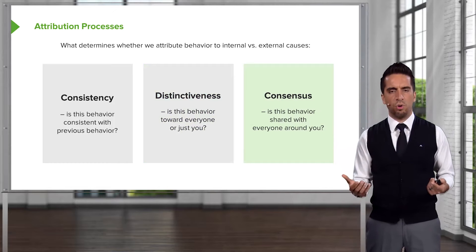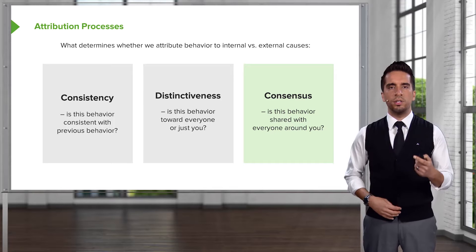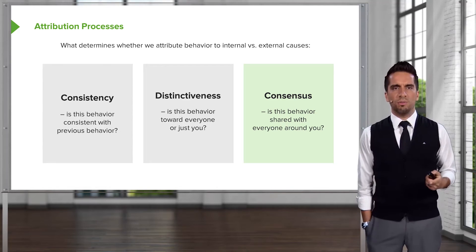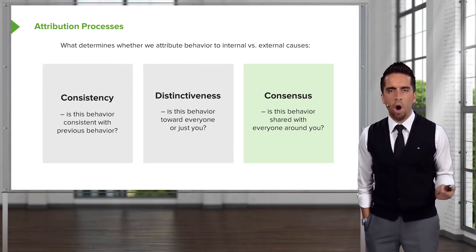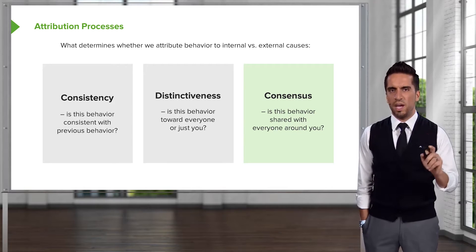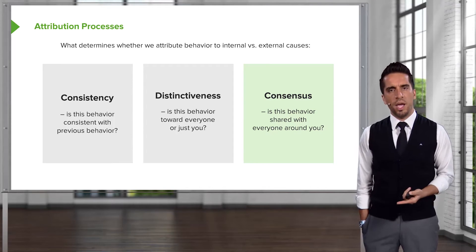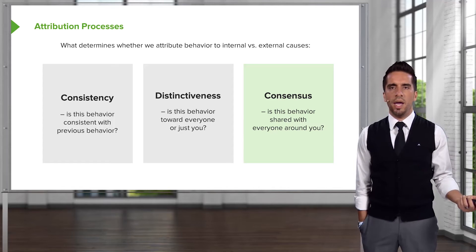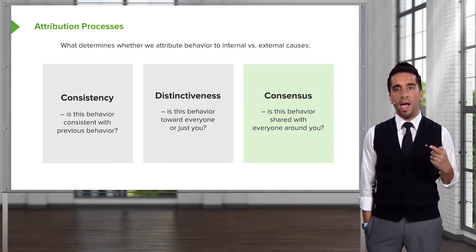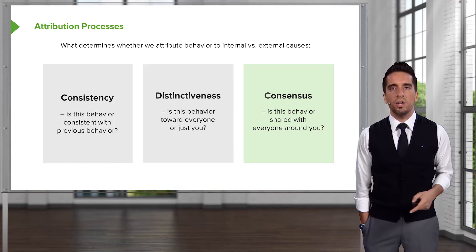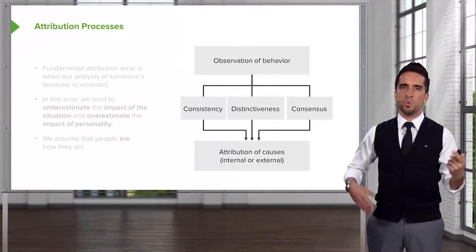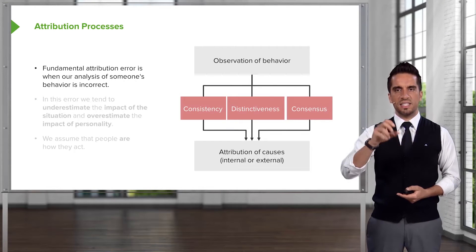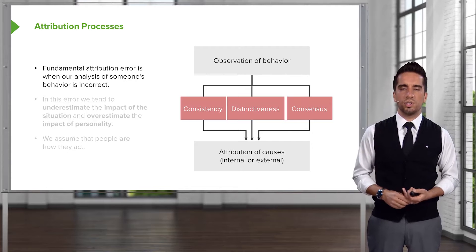For example, you're at a coffee shop and you run into somebody you know, and that person just blazes right by you and doesn't say hello. You'd go through this process and say, 'What's Dave's problem? Why did he not say hi?' He always says hi, so that addresses consistency. Then you look at distinctiveness — as you watch him walk by, he says hi to two other people. And then consensus — did he not talk to anybody and just go running to the back? You observe the behavior and look at consistency, distinctiveness, and consensus, then arrive at the attribution of causes — internal versus external.